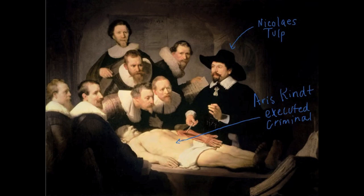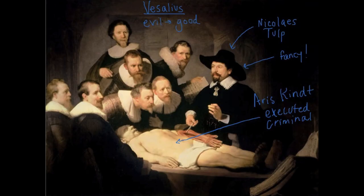Nicholas Tulp commissioned this painting, and consequently the painting does quite a bit to lionize him. For example, he's the only one wearing a hat — very fancy. Most importantly, he's showing he's in the tradition of Vesalius, the father of modern anatomy. By taking the body of a dead and sinful man, he is able to transform death and sin into virtue. In almost a divine way, he transforms evil into good here.